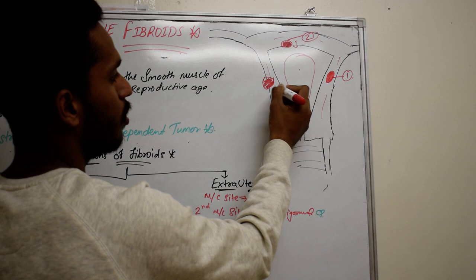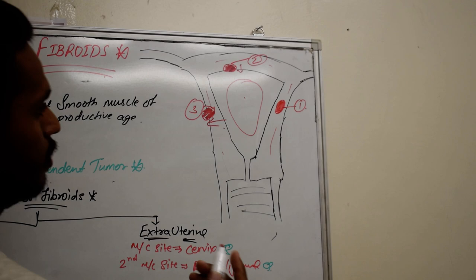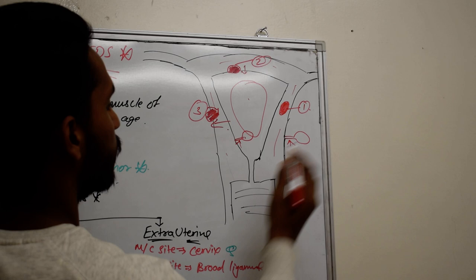The third type is subserosal. If the fibroid is going outwards towards the peritoneal cavity, we call it a subserosal fibroid. Then we have fibroids which lie on a peduncle or stalk — we call such fibroids pedunculated fibroids.